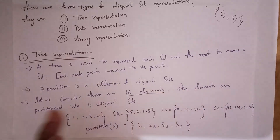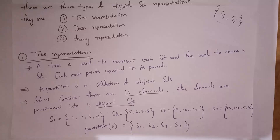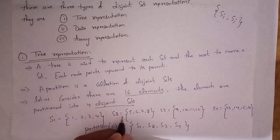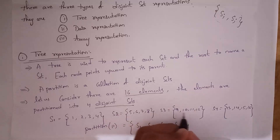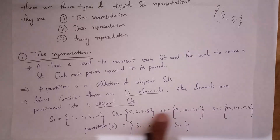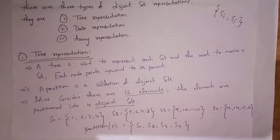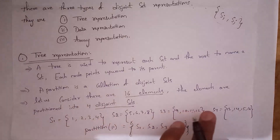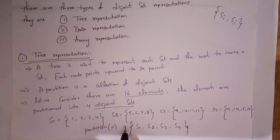Let us consider there are 16 elements partitioned into four disjoint sets: S1 = {1, 2, 3, 4}, S2 = {5, 6, 7, 8}, S3 = {9, 10, 11, 12}, and S4 = {13, 14, 15, 16}. There are no common elements between any of these sets, so S1, S2, S3, and S4 are disjoint sets. A partition is simply a collection of these disjoint sets.